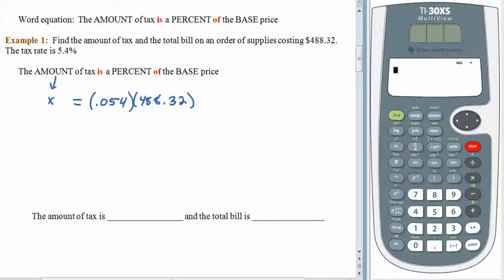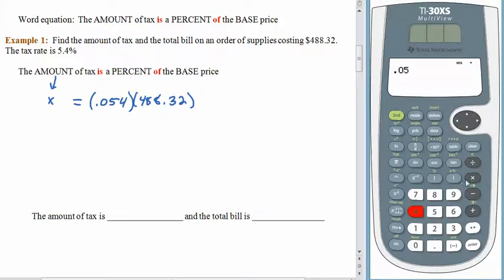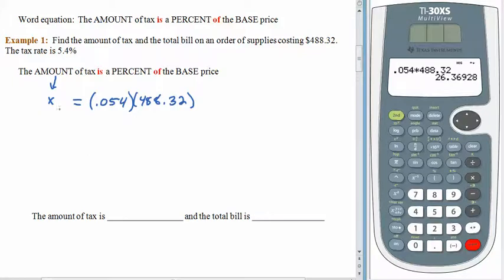So this problem is straight multiplication. Let's see what we get. 0.054 multiplied by 488.32. And there we go. How much of this answer do we need? Well, this is an amount of tax. So this is money. This x is $26.37. Now, of course, we're not done because the question asked us two things. This x was an amount of tax. That's here and that's there. So the $26.37 is the answer to the first part of the question.